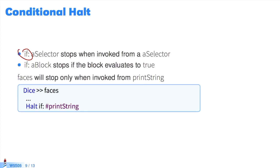Meaning that, if I put HALT IF printString, the diceFaces code has to be called from the printString method for the breakpoint to activate and the program to pause.